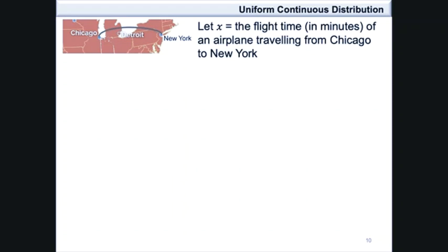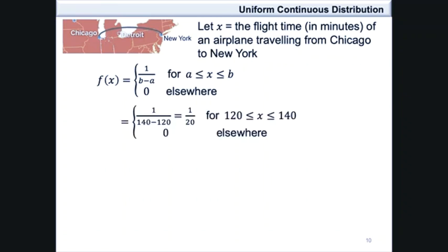Therefore, if we let x be the flight time in minutes of an airplane traveling from Chicago to New York, then the probability density function f is defined as 1 over b minus a for x values between a and b, and 0 elsewhere. This will be 1 over 140 minus 120, which is equal to 1 over 20, for x values between 120 and 140, and 0 elsewhere.